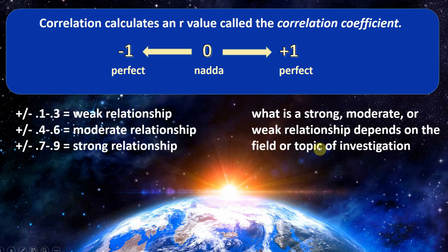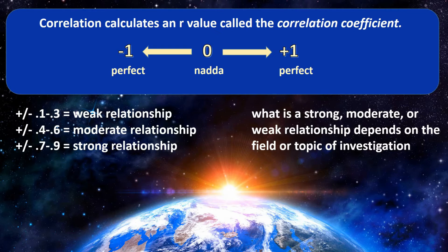I also want to point out that what is considered strong, moderate, or weak depends on the field or topic of investigation. In physics or chemistry, a correlation of 0.4 to 0.6 might be considered pretty weak. In psychology, however, a correlation in that range is actually considered very strong. So it really just depends on the field of investigation.